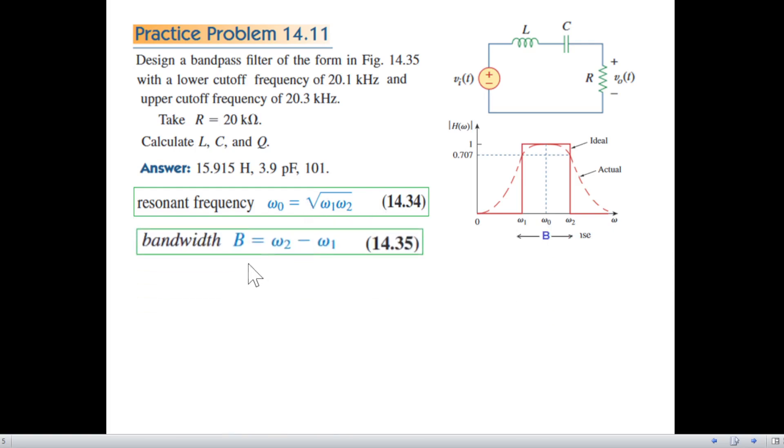Then the next is bandwidth. This is bandwidth, the difference between the two. So like from 0 to omega 2 minus 0 to omega 1 will give us bandwidth. So bandwidth can be written as omega 2 minus omega 1, and half of it is called B by 2. And why are we using this half of it? Because we can define omega 1 and omega 2 in terms of this as shown here.